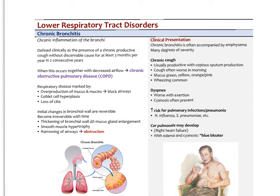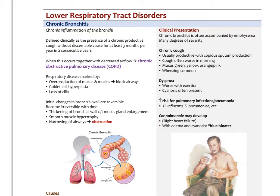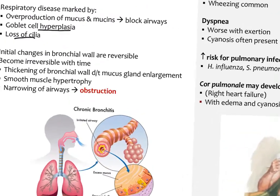In chronic bronchitis there is usually an overproduction of mucus and mucins, which blocks the airway. Mucins are the proteins in the mucus — mucus itself is a protein linked by disulfide bonds that attracts water, becoming jelly-like. Another hallmark is goblet cell hyperplasia — an overproduction of goblet cells and loss of cilia in the respiratory epithelium, resulting in loss of mucociliary clearance. Initial changes are reversible, but with time become irreversible. There is a thickening of the bronchial wall due to mucous gland enlargement, and smooth muscle begins to atrophy, eventually resulting in complete narrowing and obstruction of the airways.